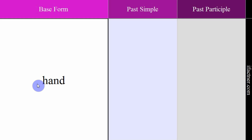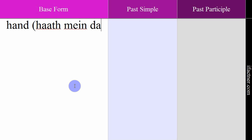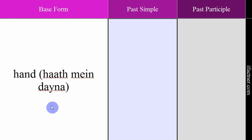The first regular verb is 'hand'. Although hand generally means haath (hand), as a verb, 'hand' means 'haath mein deyna' — to give something by hand. Example sentence: 'Hand me over your mobile phone.' — Mujhe apna mobile phone do.